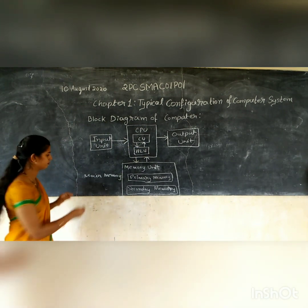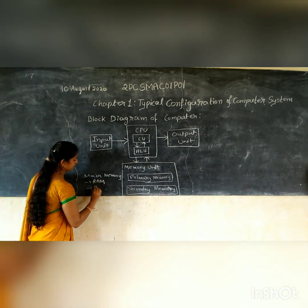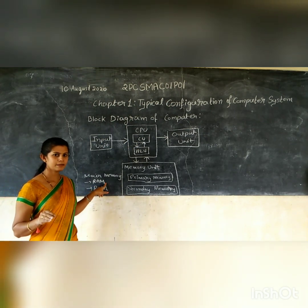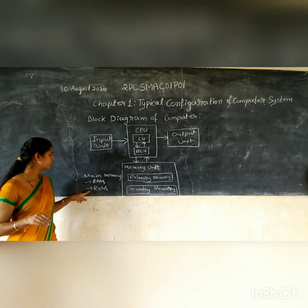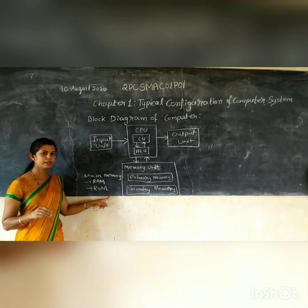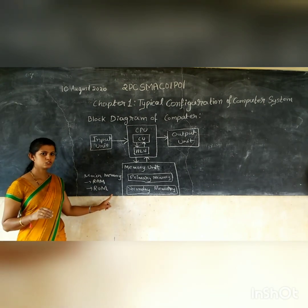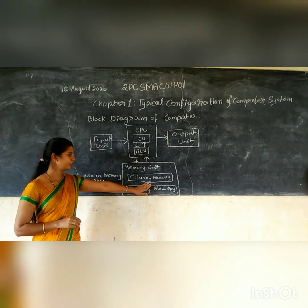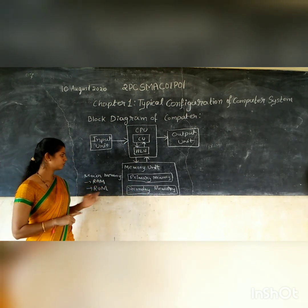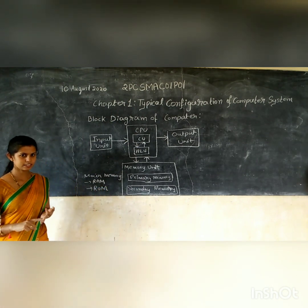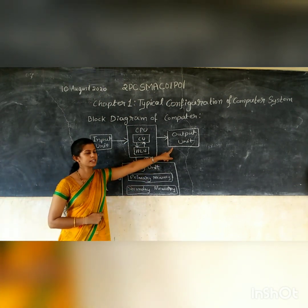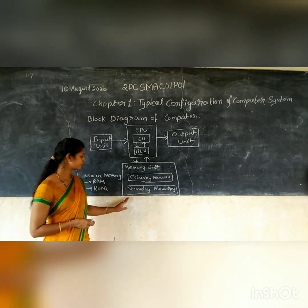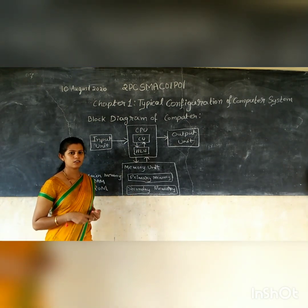Primary memory contains RAM and ROM. RAM stands for Random Access Memory — it is dynamic and temporary, and stores the files you are currently working on. ROM is read-only memory, which is non-volatile and permanently stores the files or instructions for your computer. So primary memory stores data, instructions, intermediate results, and output before it is given to the output unit.